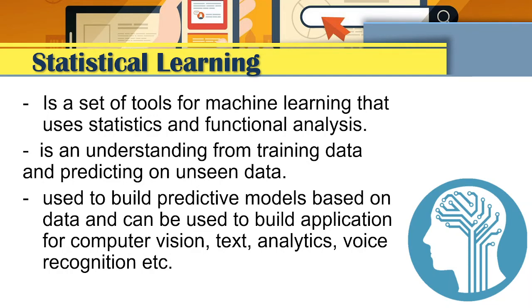Statistical learning is a set of tools for machine learning that uses statistics and functional analysis. It is also an understanding from training data and predicting unseen data. It is also used to build predictive models based on data and can be used to build applications for computer vision, text analytics, voice recognition, and more.